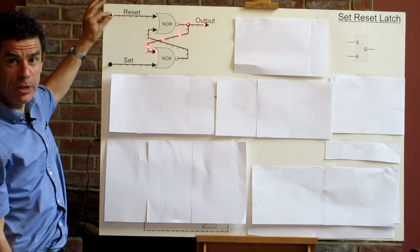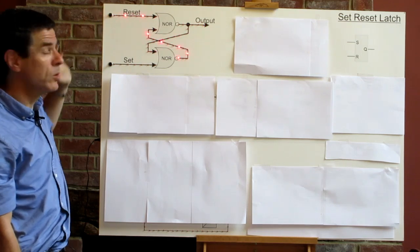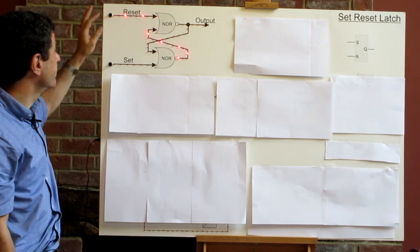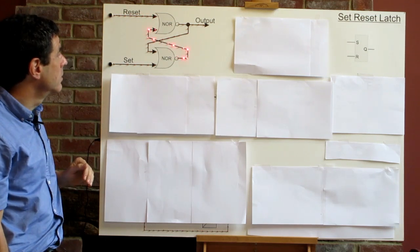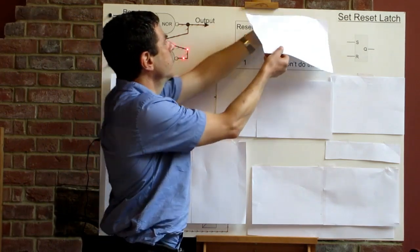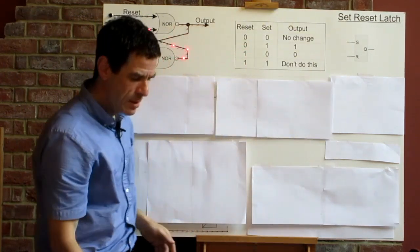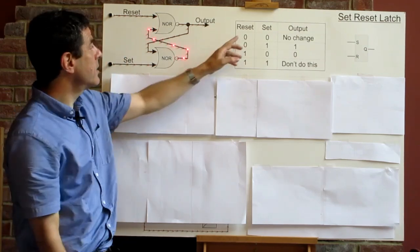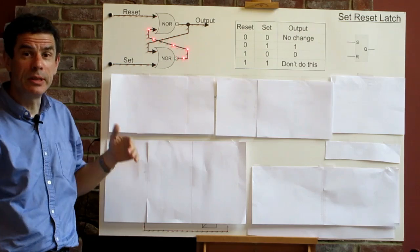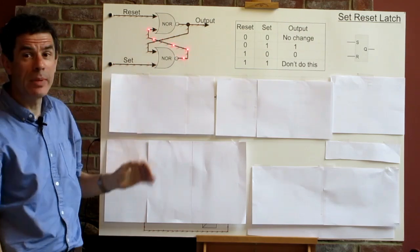If we now take the reset input to high, our output becomes low. So we can capture that kind of behaviour in a little table like this. So when reset and set are both low, the situation is stable and the output remains unchanged.